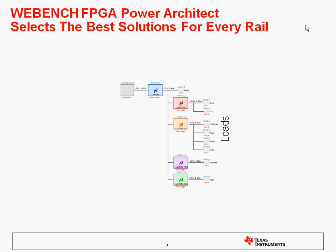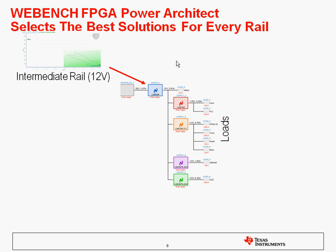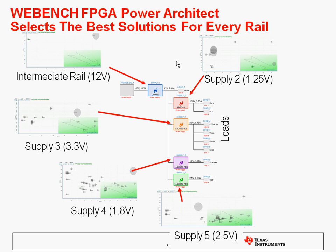How does WebBench Power Architect work? Here's an example of a typical power tree. On the left side, you have your input voltage — a 48-volt nominal. On the right side, you have your loads. In the middle, WebBench has selected the power supplies for you. For each one of these power supplies, WebBench can select among dozens of different options, and depending on where you set your optimization knob, it's going to pick the topmost candidate based on your desired performance. It does that for each supply in the power tree, running literally thousands of different design candidates to pick the best one for your design goals.